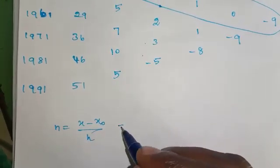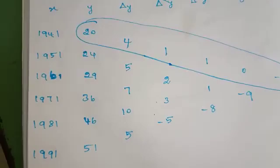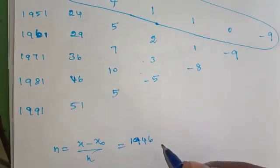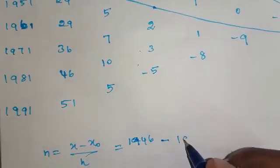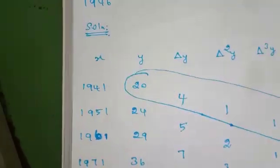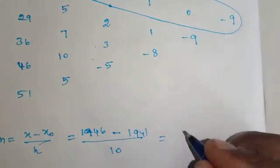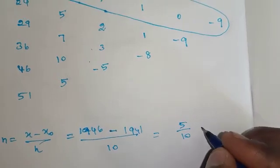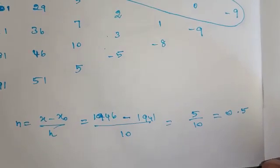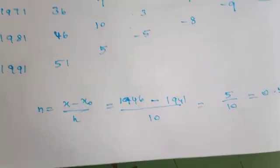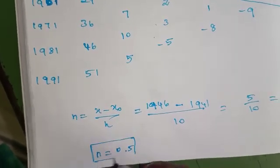n value: n = (x minus x₀) divided by h. x = 1946, x₀ = 1941, h = 10. So n = (1946 minus 1941) divided by 10 = 5 divided by 10 = 1/2 = 0.5. So n = 0.5.